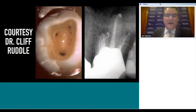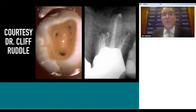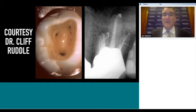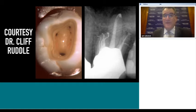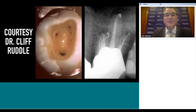My good friend Cliff Ruddle shows this beautiful case—the ideal access, what we call a class one inlay preparation, where you can visualize all the canals. When you place an instrument, whether stainless steel or nickel-titanium, the first contact should be in the root canal wall, not scraping along the access wall. Joining the cusp tip to the pulp horn to the orifice to the point of curvature gives beautiful tactile control, even in severe curvatures.